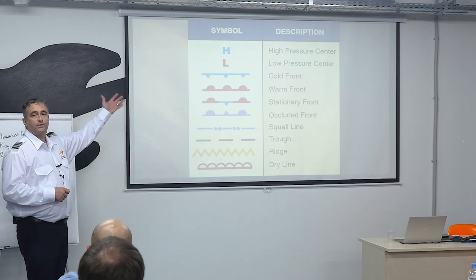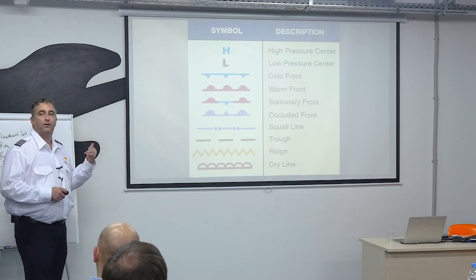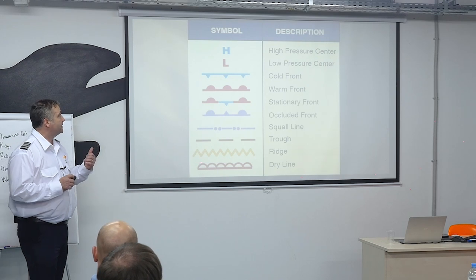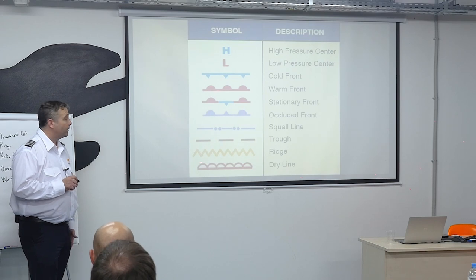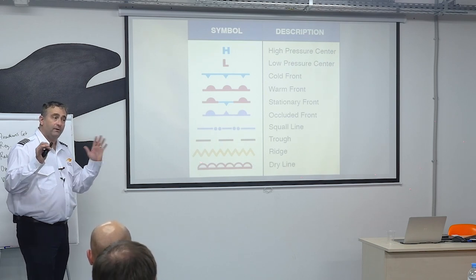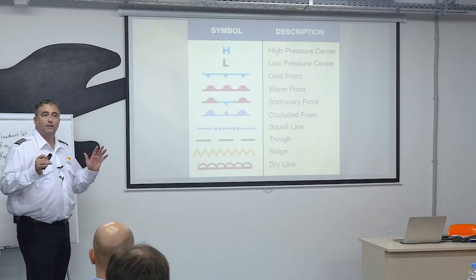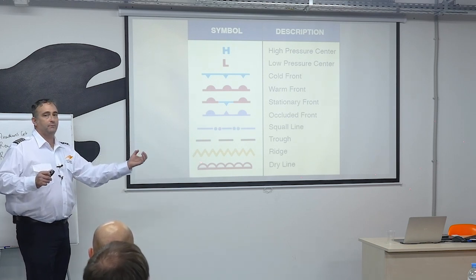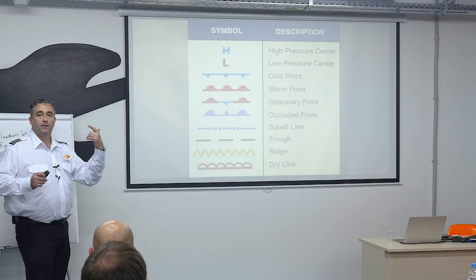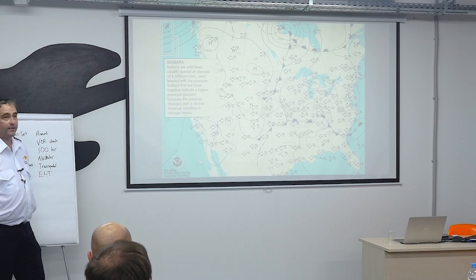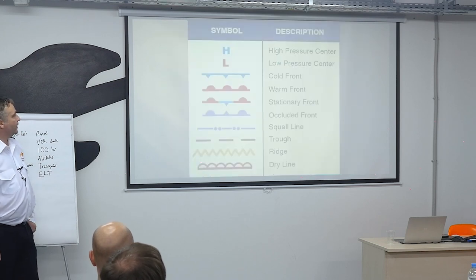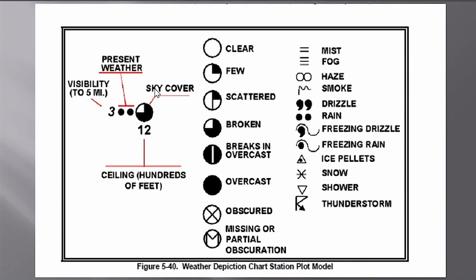When I look at a surface analysis, the things I want to know right away are: Where's my high pressure? Where's my low pressure? Where are the fronts and what kind are they? Once I have that situational awareness, I add where the isobars are and how closely spaced together they are, and I understand my wind flows. I can rapidly gather a lot of information from that chart.